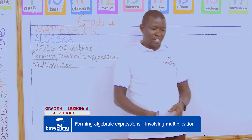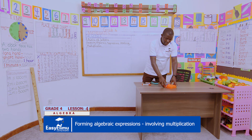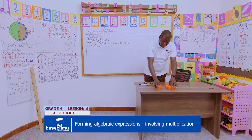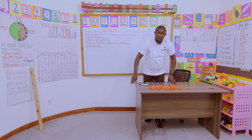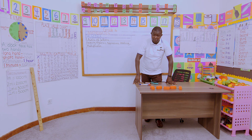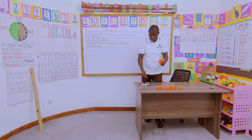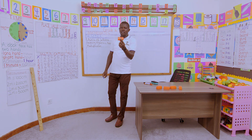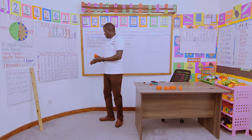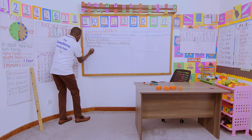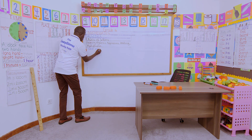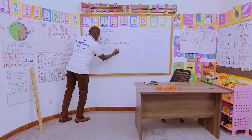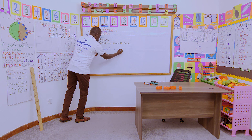Now I would like us to pair in groups and identify what I have on the table. I have some blocks with me, and I would like us to use the first one. In our groups, if the cost of one block is T shillings — the cost of a block is T shillings.